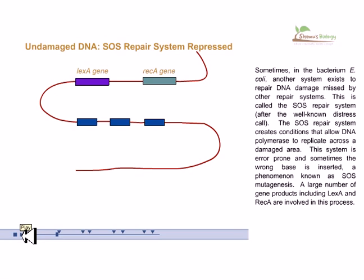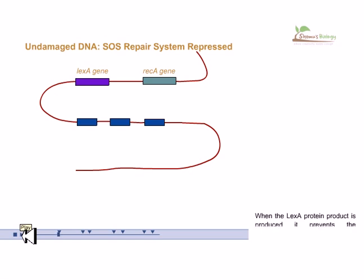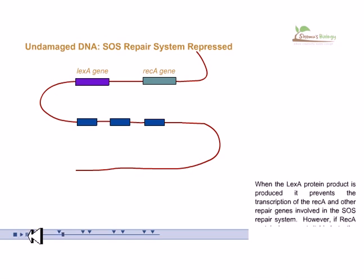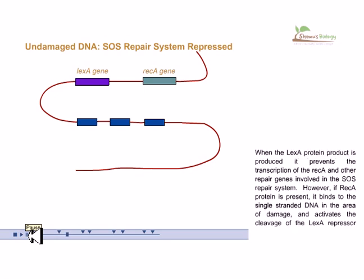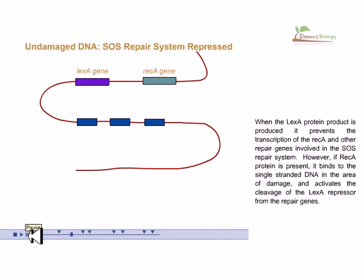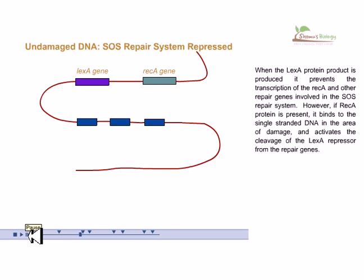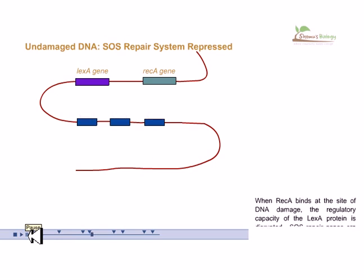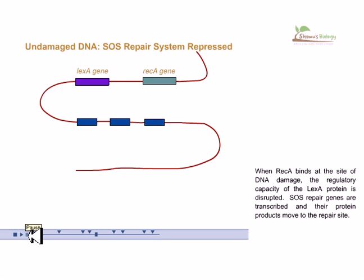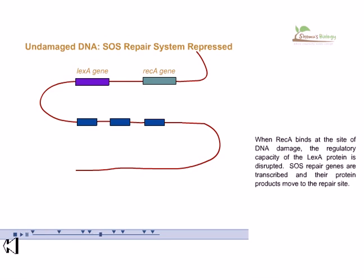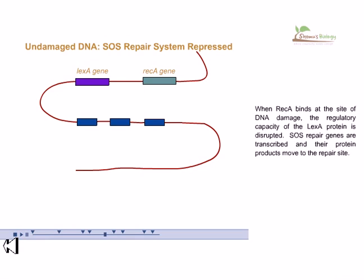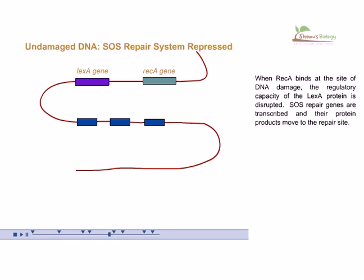A large number of gene products, including LexA and REC A, are involved in this process. When the LexA protein is produced, it prevents transcription of REC A and other repair genes involved in the SOS repair system. However, if REC A protein is present, it binds to single-stranded DNA at the area of damage and activates the cleavage of the LexA repressor. When REC A binds at the site of DNA damage, the regulatory capacity of the LexA protein is disrupted, SOS repair genes are transcribed, and their protein products move to the repair site.